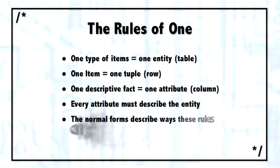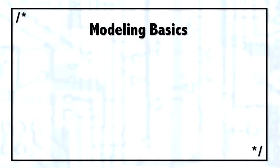If you follow these three rules of one, meaning one type of item, one entity, one item, one tuple, one fact, one attribute, you will always be normalized. Some key terms used throughout database modeling.